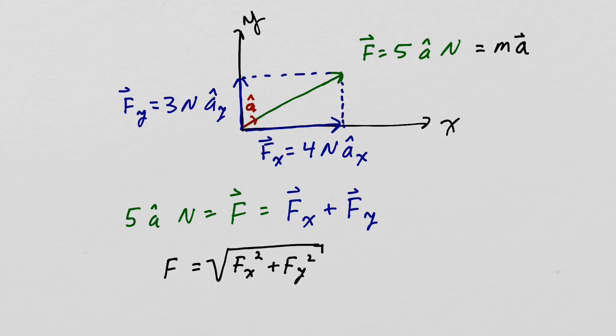If we are working in three dimensions, then we would also have a Z component. And the magnitude would be the square root of F sub X squared plus F sub Y squared plus F sub Z squared.